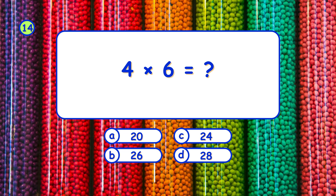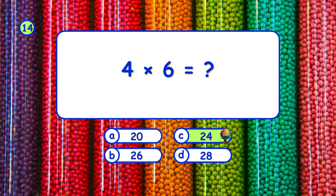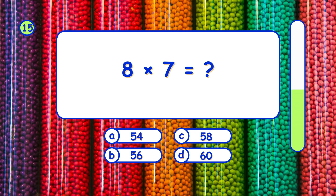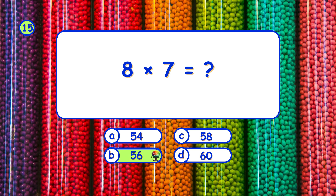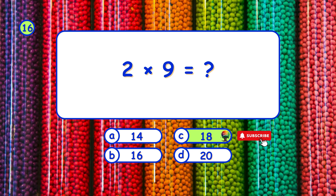What is 4 times 6? It's C, 24. What is 2 times 9? It's C, 18.